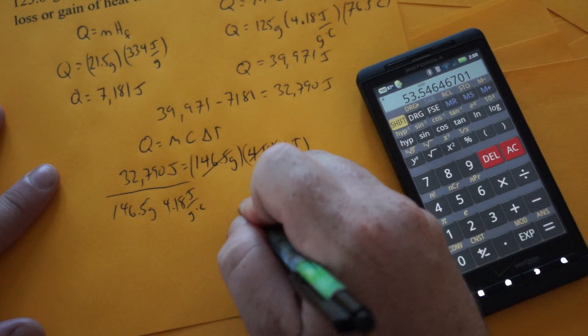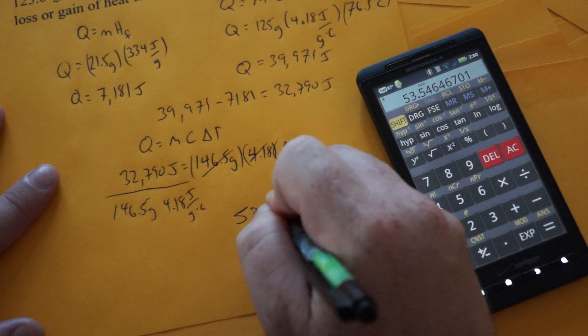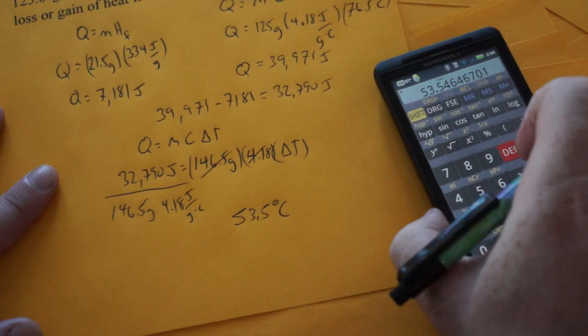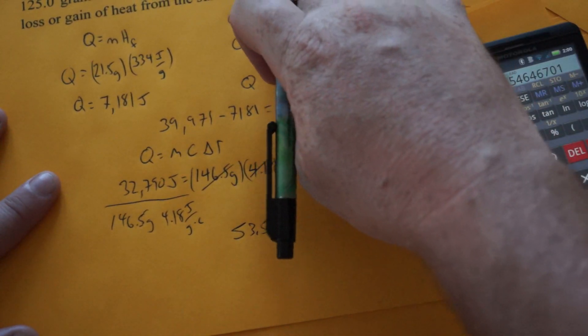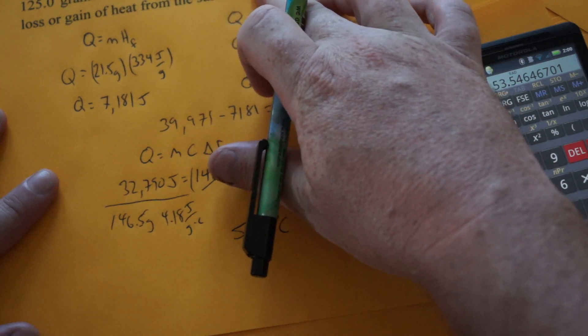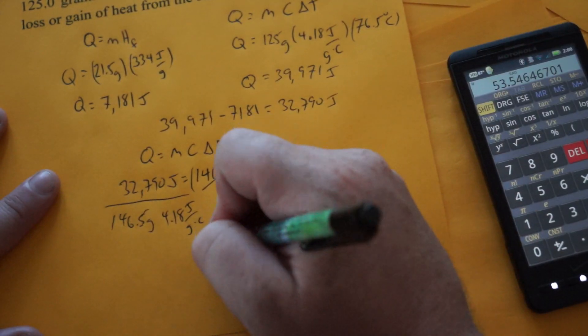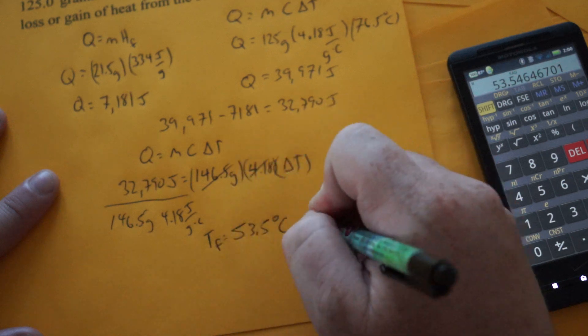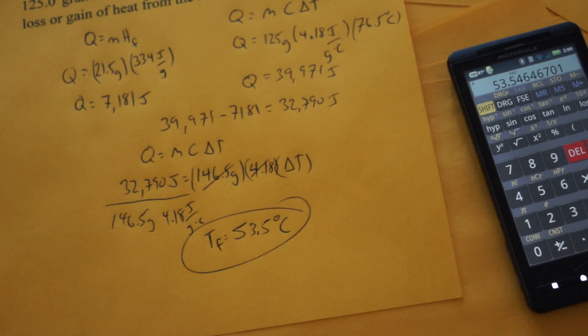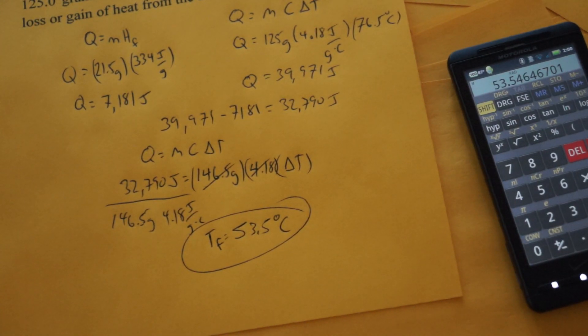And the final temperature is going to be 53.5 degrees Celsius, which happens to fall between the initial temperature of the warm water and zero for the ice. So that's your TF. That's how you figure out your final temperature when you drop ice into water.